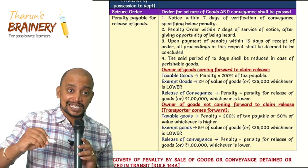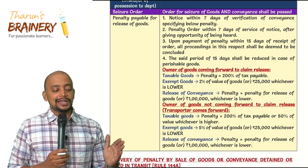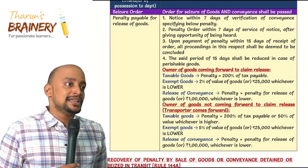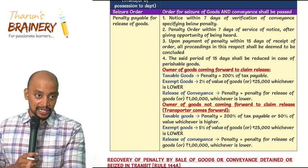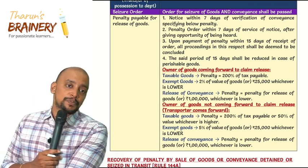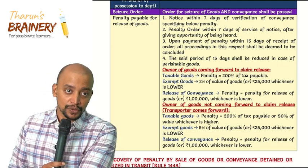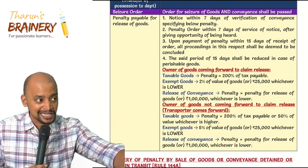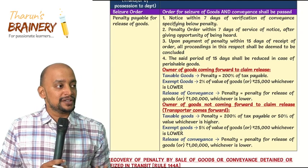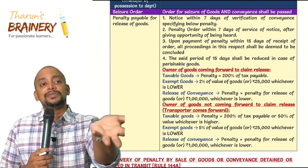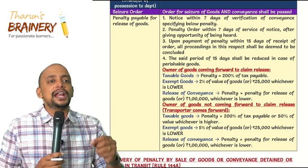This 15-day period can be reduced in case of perishable goods. If within that 15 days the person has not paid the penalty, the goods will be disposed of. Whatever money is realized by the department through disposal — they will adjust the penalty amount, and the remaining balance will be returned to the owner. Note that here only a seizure order is passed, not a confiscation order — so the balance is returned unlike in a confiscation scenario.